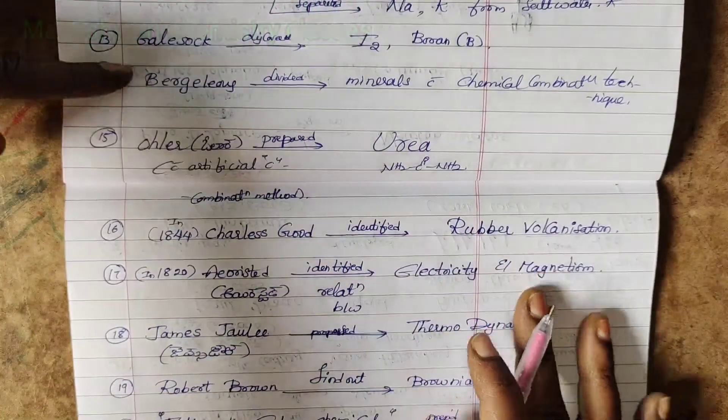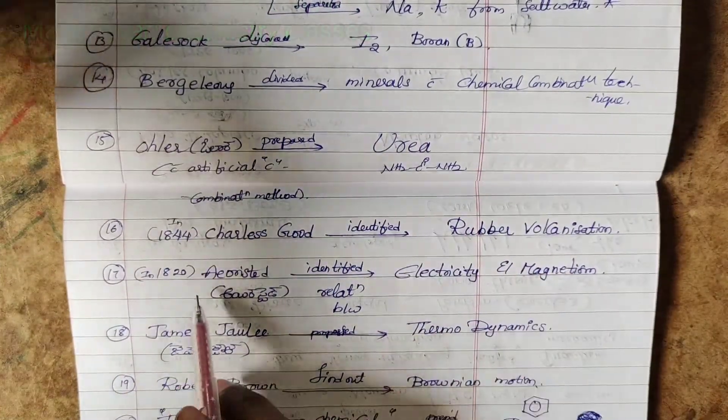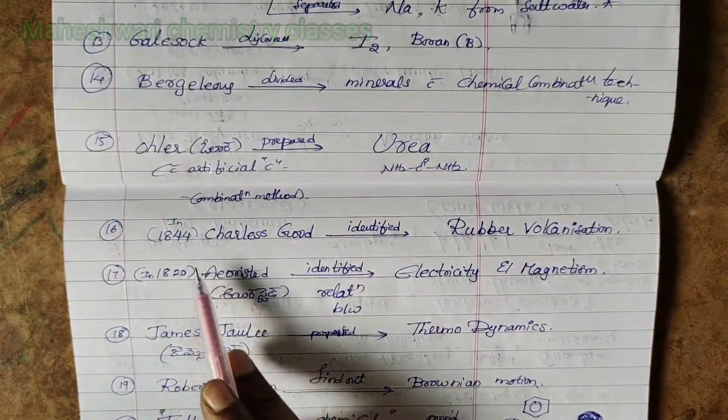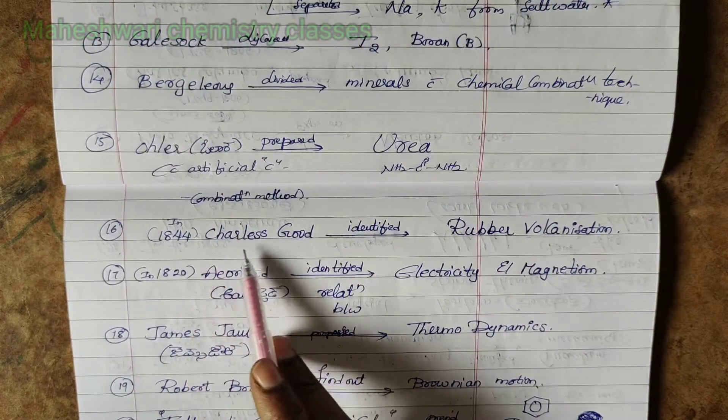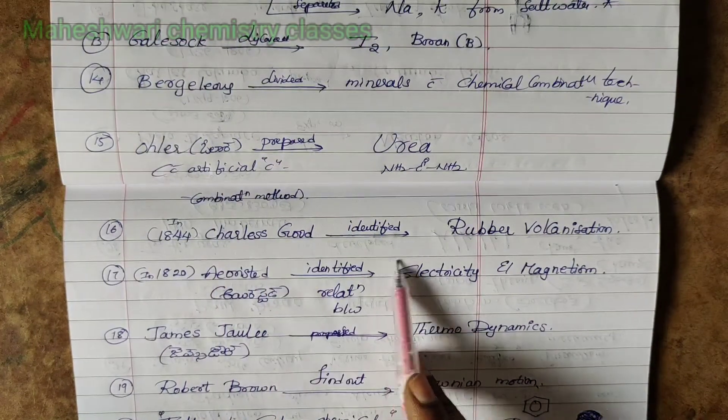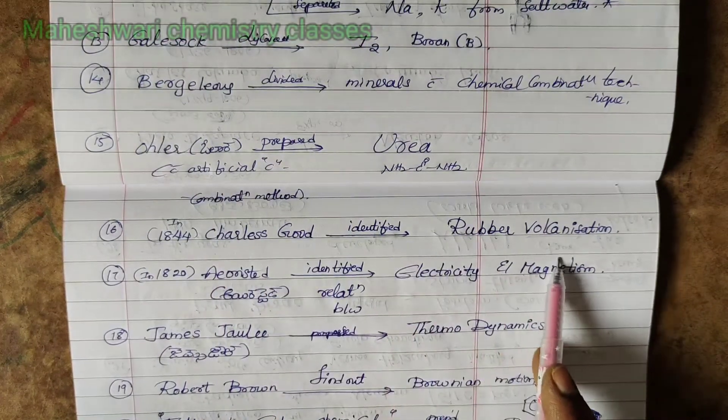In the year 1844, Charles identified rubber vulcanization.